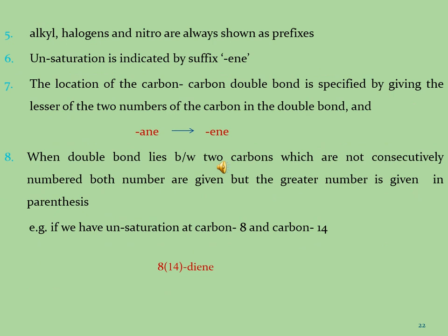Rule 5: Alkyls, halogens, and nitro groups are always shown as prefixes. Rule 6: The degree of unsaturation is indicated by the suffix '-ene.' Rule 7: The location of the carbon-carbon double bond is specified by giving the lesser of the two carbon numbers in the double bond, and '-ane' is converted into '-ene.' Rule 8: When the double bond lies between two carbons that are non-consecutively numbered, both numbers are given but the greater number is placed in brackets. For example, if unsaturation is at carbon 8 and carbon 14, the greater number 14 will be written within brackets and the lesser number 8 outside the bracket, written at the end as 'diene.'